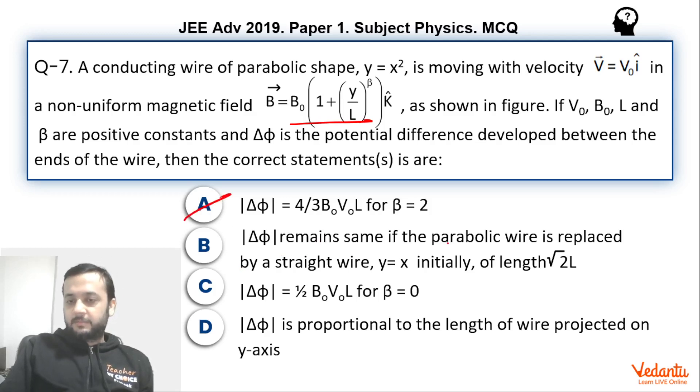Δφ remains same if the parabolic wire is replaced by a straight wire y equals x initially of length √2L. So if you replace this parabolic wire by a straight line and this length is √2L, of course we can say that this is 45 degrees. So this will also be L and this will also be L.